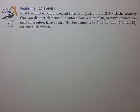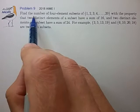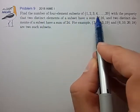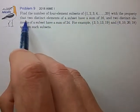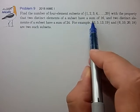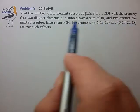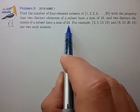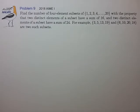Hi, this is problem 9 from the 2018 AIME I. Find the number of four-element subsets of 1 through 20 with the property that two distinct elements of a subset have a sum of 16, and two distinct elements of a subset have a sum of 24. Okay, this is a difficult problem.